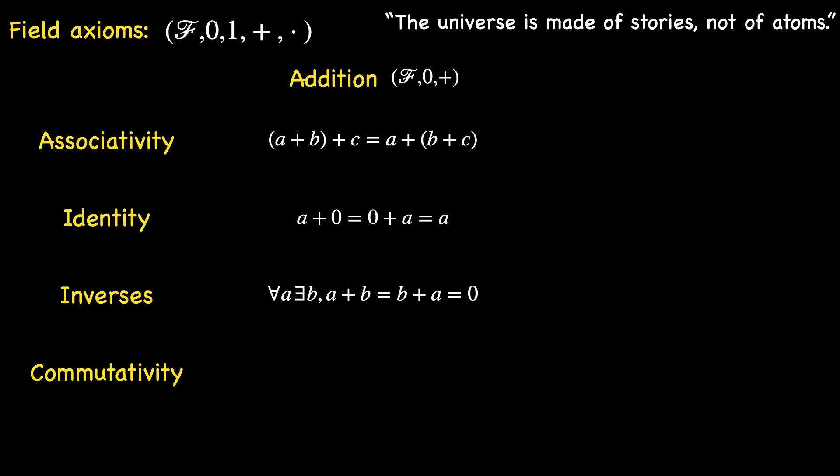Lastly, addition is commutative, meaning that A plus B is the same as B plus A. Shifting our focus to multiplication, we find a similar landscape, associative and commutative. Yet, the presence of 0 introduces a twist. The existence of a multiplicative identity and inverses becomes elusive when 0 enters the equation. Consequently, we narrow our focus to elements other than 0 when considering these properties.